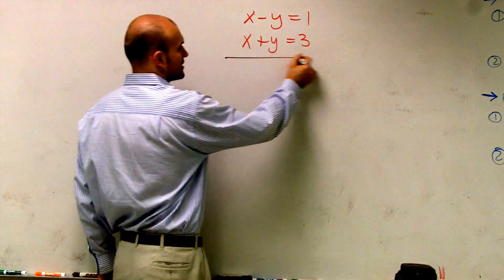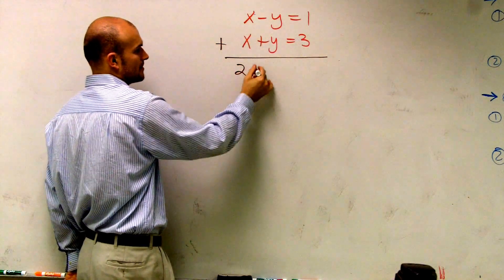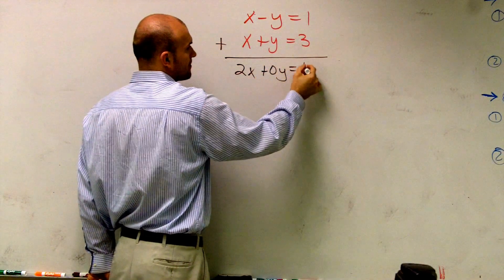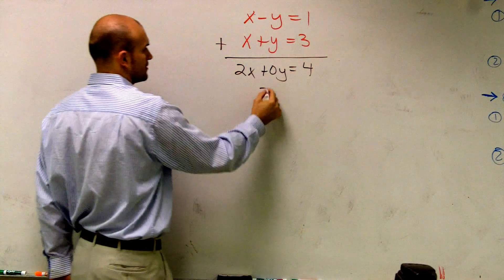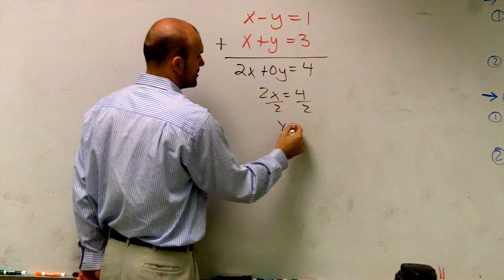So for this one, let's use addition real quick, and then I'll do subtraction. So, addition. x plus x, 2x. Negative y plus positive y, 0y. 1 plus 3 equals 4. Okay? 2x equals 4. Divide by 2, x equals 2.